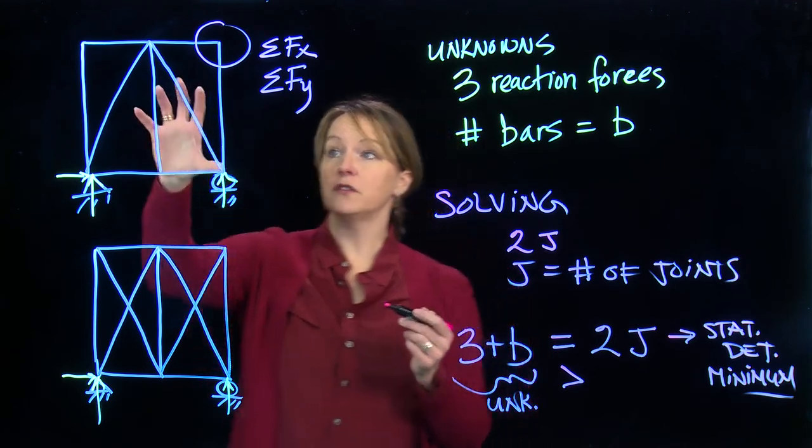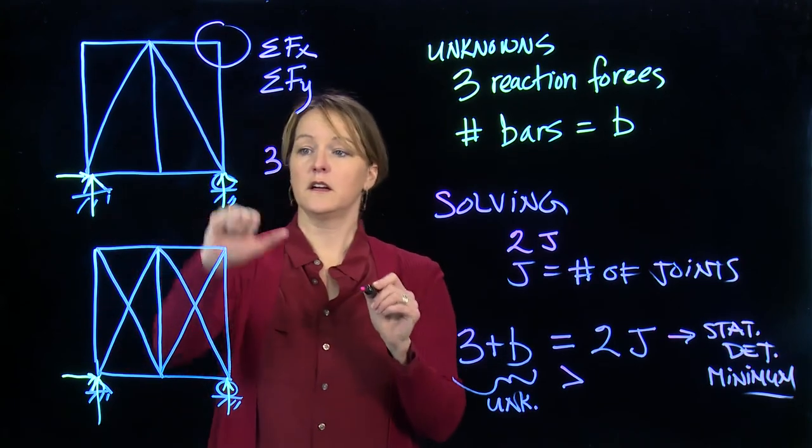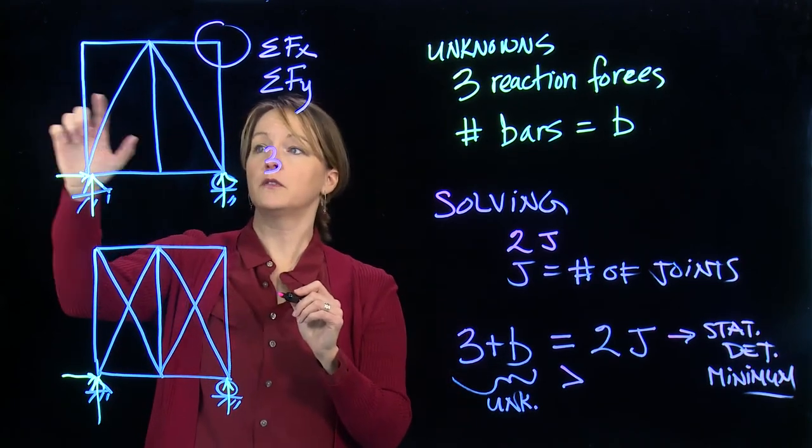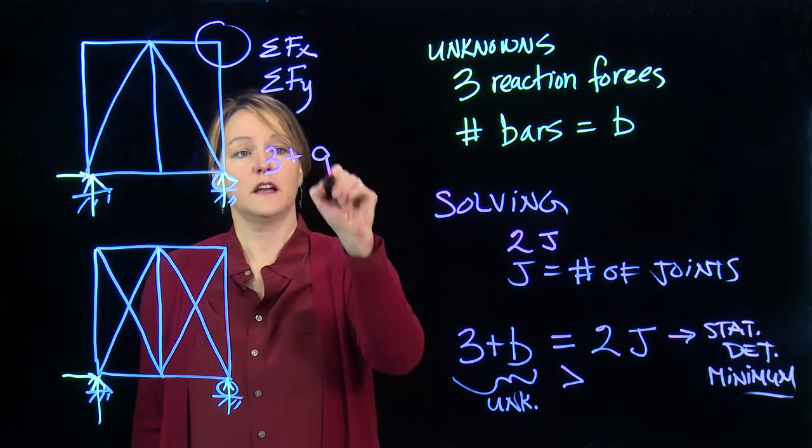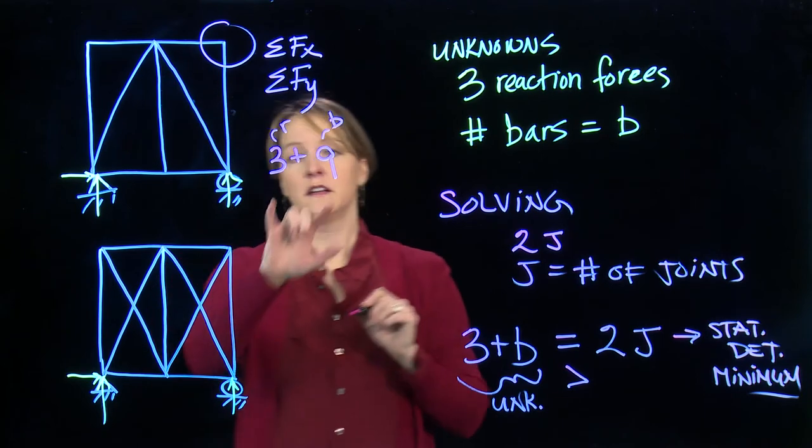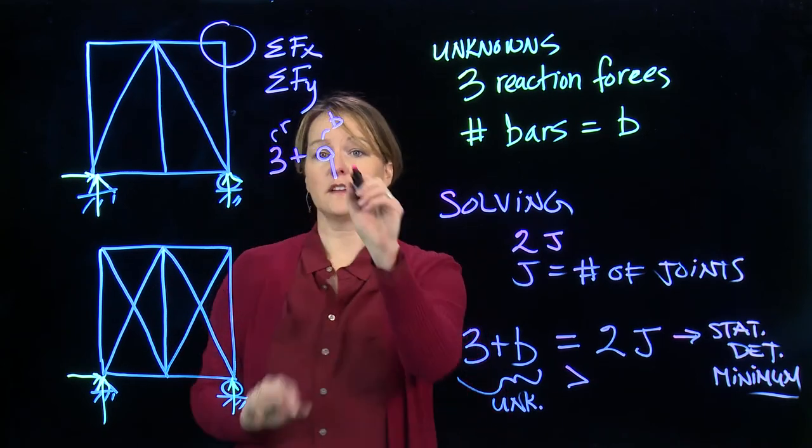So if we look at these two, for this one, we have three reactions. For bars, we have 1, 2, 3, 4, 5, 6, 7, 8, 9. So 3 plus 9. These are the reactions. These are the bars. Those together are my unknowns, and that is 12.